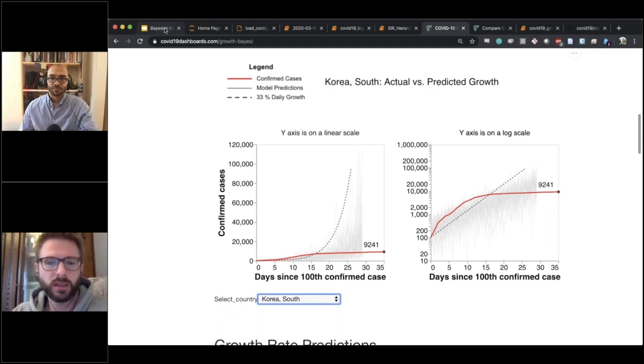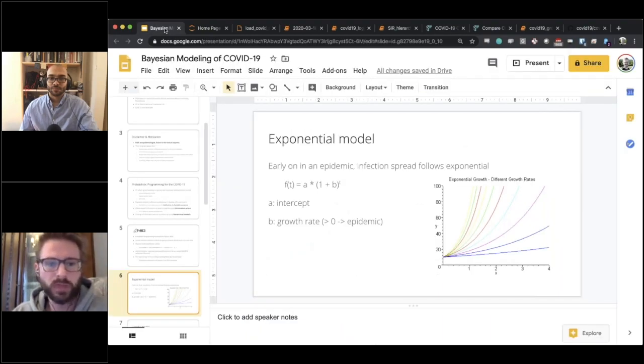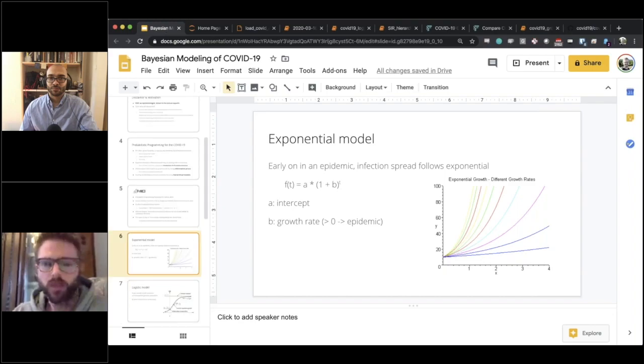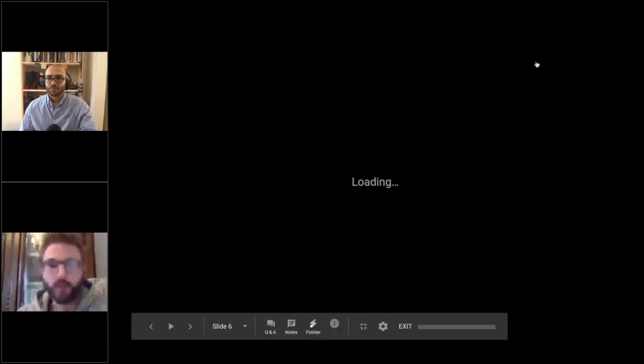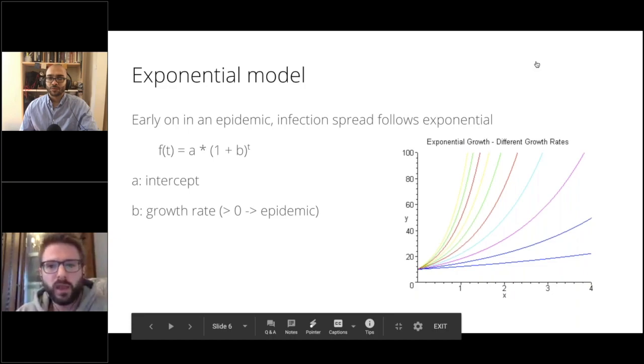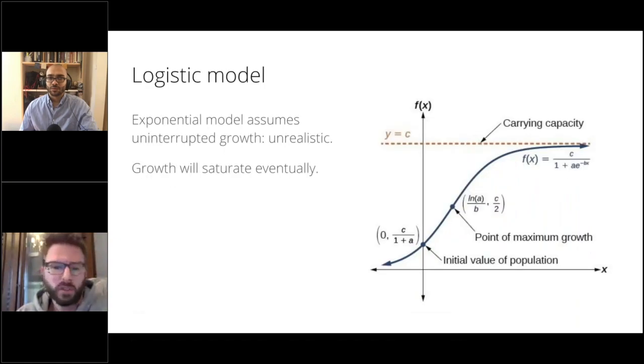But what we can do then, of course, is start to improve the model and see, well, what is the next iteration you can do to try and improve things? And one fairly simple addition is to use a so-called logistic model, which gets around this unreasonable assumption that we just keep having uninterrupted growth. So there will be somewhere where this stops, at the very least, at the number of the total world population. And let's hope that that is not the carrying capacity.